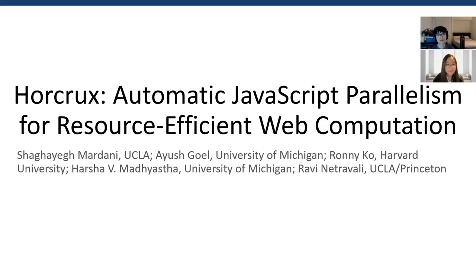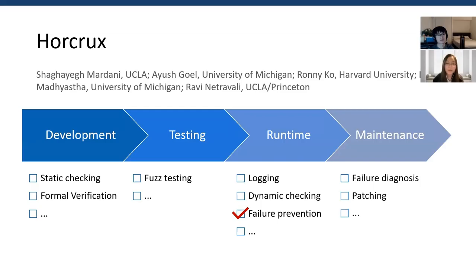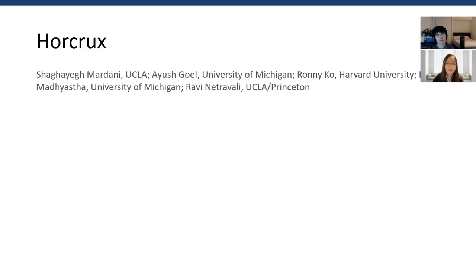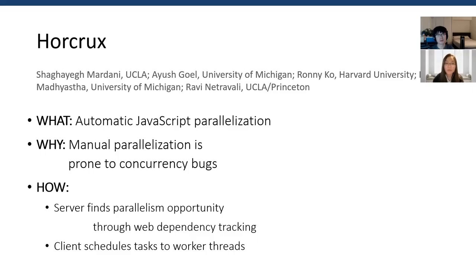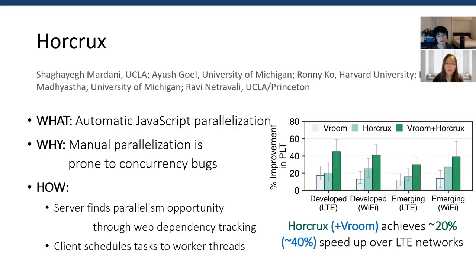The next paper is titled Holcrux: Automated JavaScript Parallelization for Resource-Efficient Web Computation, from UCLA, University of Michigan, Harvard University, and Princeton. This paper is about automated parallelization, which is related to failure prevention in the runtime stage, because manual parallelization is prone to concurrency bugs. This paper focuses on automated parallelizing of JavaScript web pages. To solve this problem, Holcrux separates the workload into two parts: first, the server finds parallelism opportunities with web dependency tracking; second, the client uses this information to schedule tasks to web workers in the JavaScript engine. With this server-client cooperation, Holcrux achieves around 20% speedup over LTE networks.